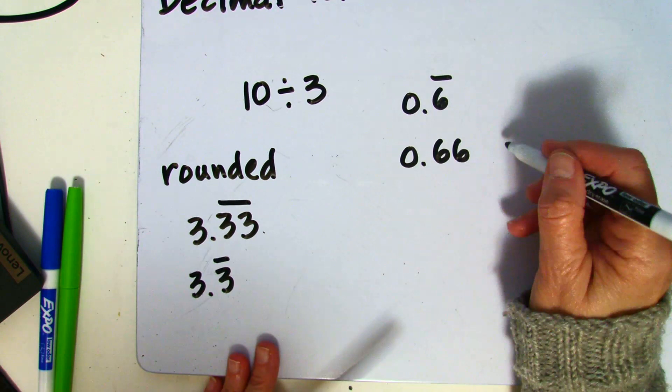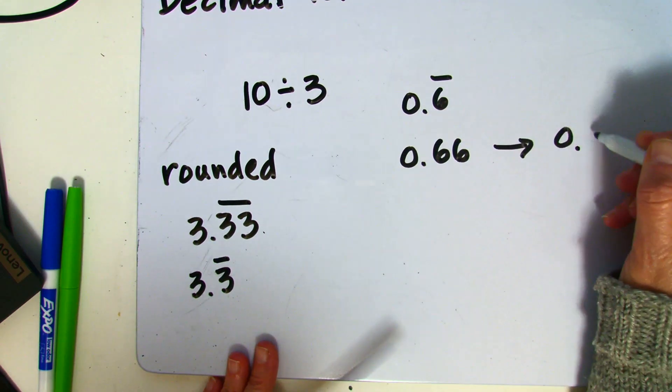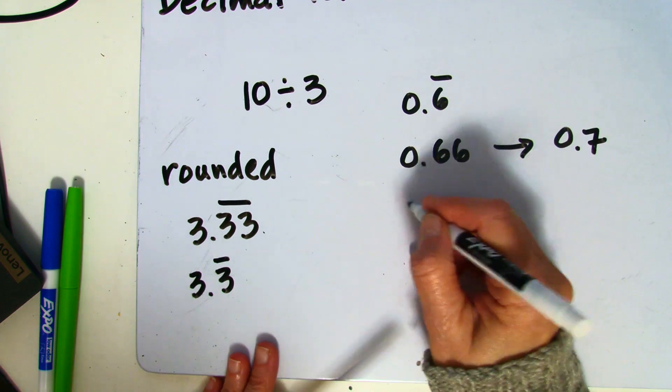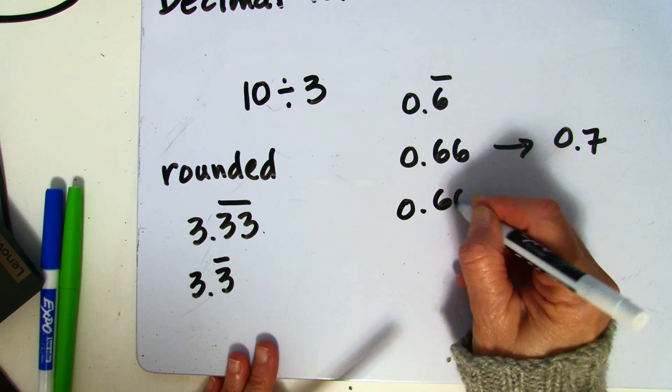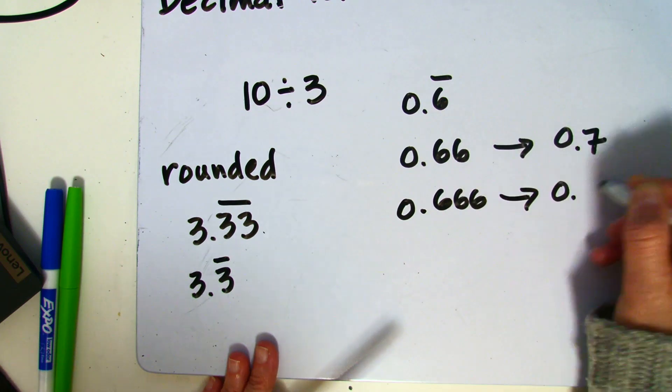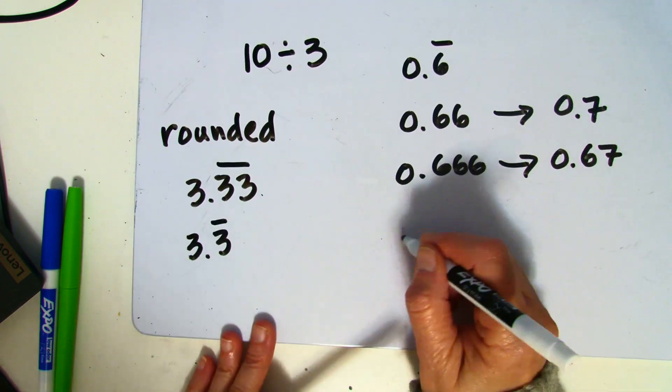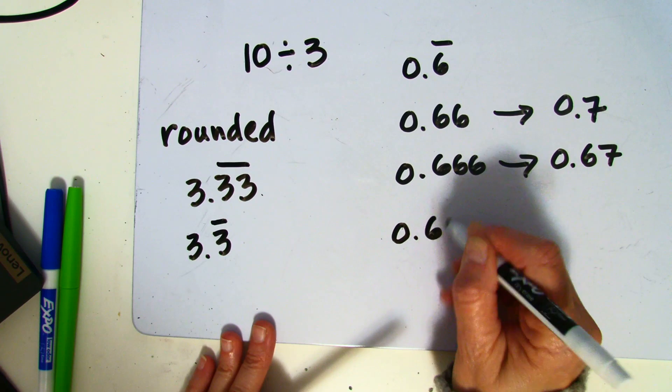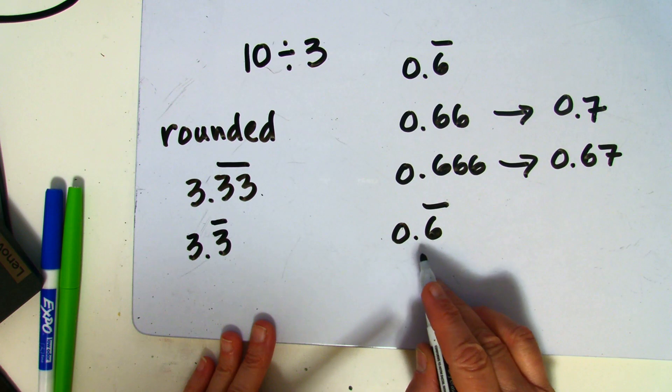And again, if we're rounding to the nearest tenths, that would become 0.7. More likely, you'll round to the nearest hundredths, so that will become 0.67. But if you see something like 0.6̄ with a line over it, that means that in your decimal answer, you're going to get a repetition of sixes after the decimal point.